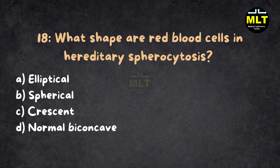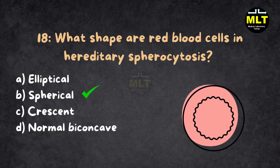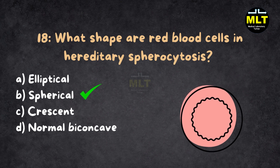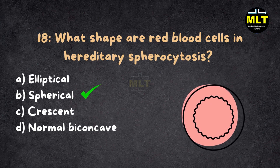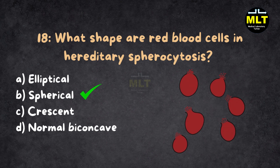Correct answer: B. Spherical. Explanation: Hereditary spherocytosis is a genetic condition causing RBCs to become spherical, making them prone to destruction.